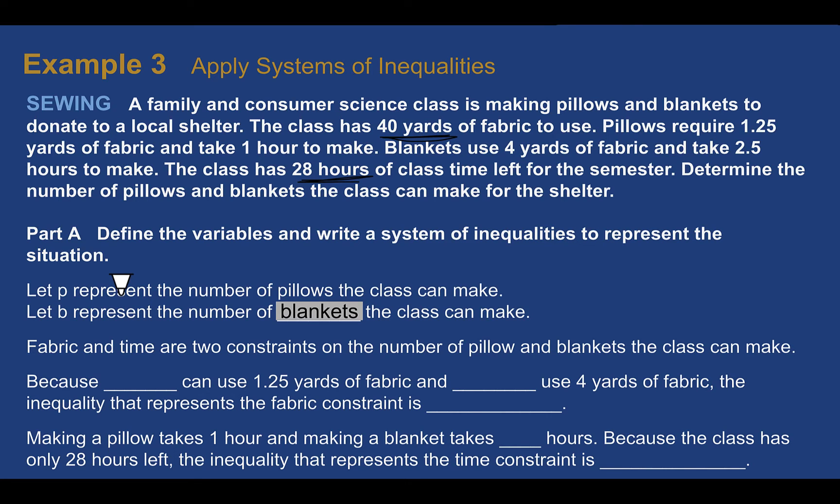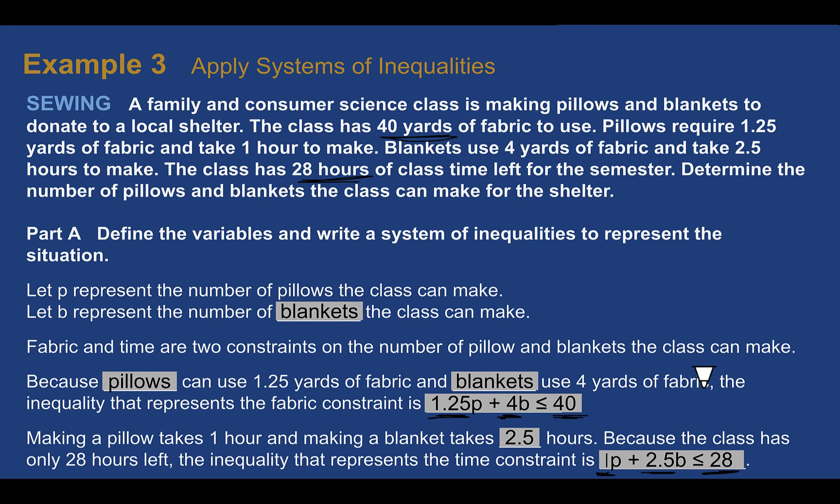In inequalities, we have constraints where we can't go past certain things. Here, they only have a certain amount of fabric to use, and they only have a certain amount of time left. So fabric and time would be the constraints. There are limits to what they can do. So because pillows take 1.25 yards of fabric and blankets use 4, then we would write an inequality that looks like this. It's 1.25 per pillow and 4 for each blanket, but there's only 40 yards they can use. So the blankets and the pillows have to be less than 40, but they could also be equal to 40 if they somehow managed to get it perfectly. As for our time constraint, pillows take 1 hour while blankets take 2.5. So since the class only has 28 hours left, 1 for a pillow and 2.5 for a blanket has to be less than or equal to 28. So we can see here in our inequalities, this is talking about fabric, this is talking about fabric, this is talking about fabric. For our other one, this is a 1 here, this is talking about time, this is time, and this is time. The numbers that represent the same thing usually are paired together.